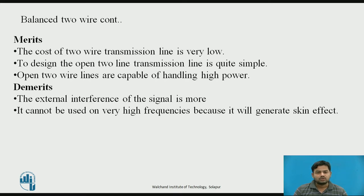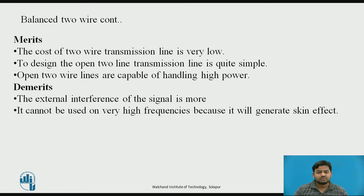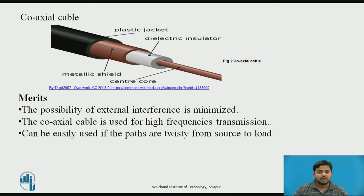The advantages of the balanced transmission line include the ability to transfer large power from one point to another, as used in the power grid for transmitting power. It is also simple to design. The demerits are that it is more prone to external noise because it is unshielded and susceptible to interference from electromagnetic waves present in the atmosphere.